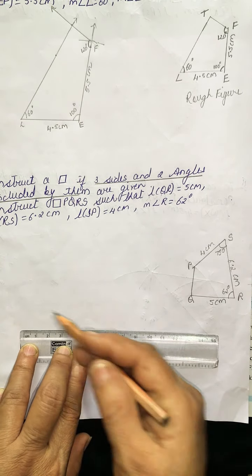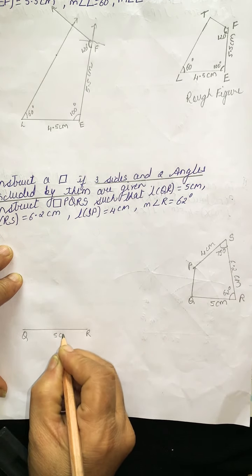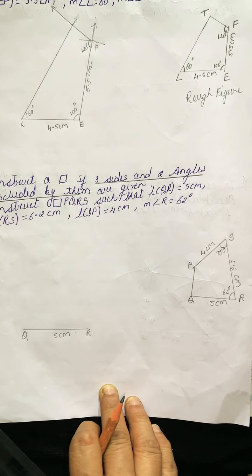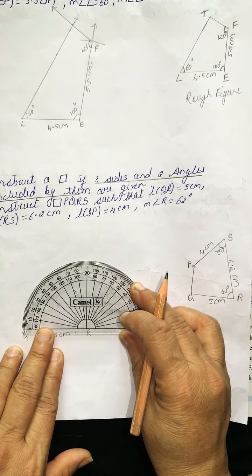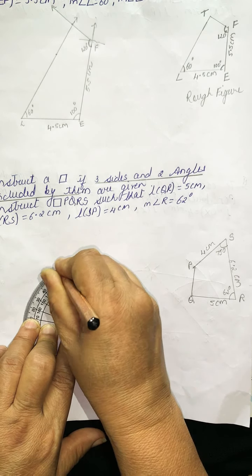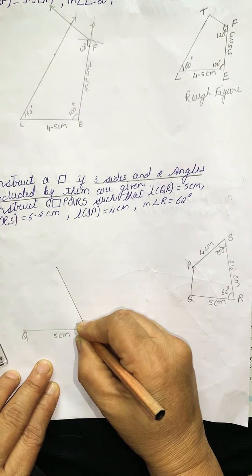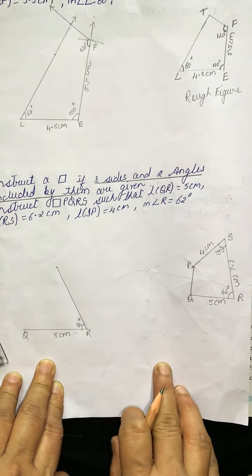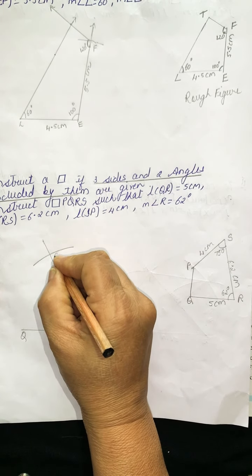Draw QR as 5 centimetres. Then let us take angle R = 62 degrees. The outer scale is going to coincide with this. So here, 62 degrees. This is 62 degrees. Now this is 6.2 centimetres, so on the scale I will take 6.2 centimetres. Just connect it — so this is your point S.